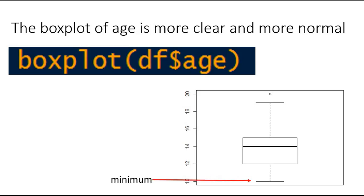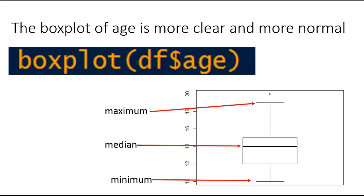This is the minimum. This one represents the maximum age. This is the median age, and this one represents the outlier. 25 percent of data lies here, 25 percent of data lies here, 25 percent data, and then 25 percent data. This is more normally distributed as compared to the salary data.